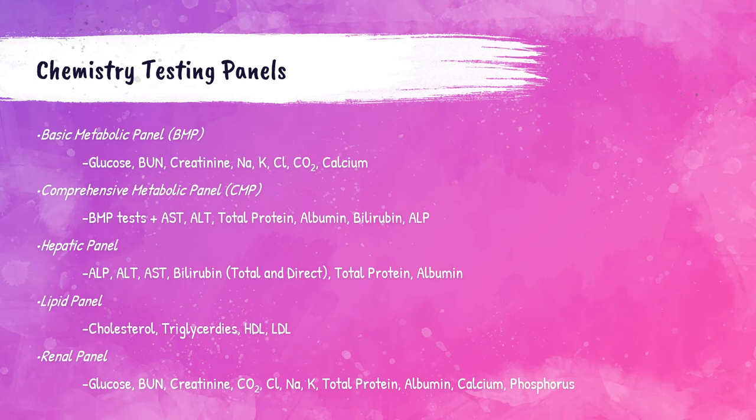The basic metabolic panel (BMP) includes glucose, BUN, creatinine, sodium, potassium, chloride, carbon dioxide, and calcium. The comprehensive metabolic panel (CMP) includes everything in the BMP and additionally has AST, ALT, ALP, total protein, albumin, and bilirubin.